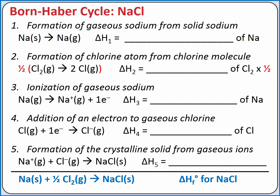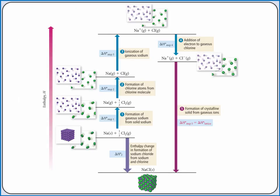So according to Hess's law, if we add together the enthalpy changes for each of these steps, we will get the overall enthalpy change for the reaction. The first three steps listed are endothermic — the process of sublimation, breaking a bond, and removing an electron all require energy added to the system. Adding an electron to a gaseous atom is generally exothermic, and the lattice energy is always highly exothermic.